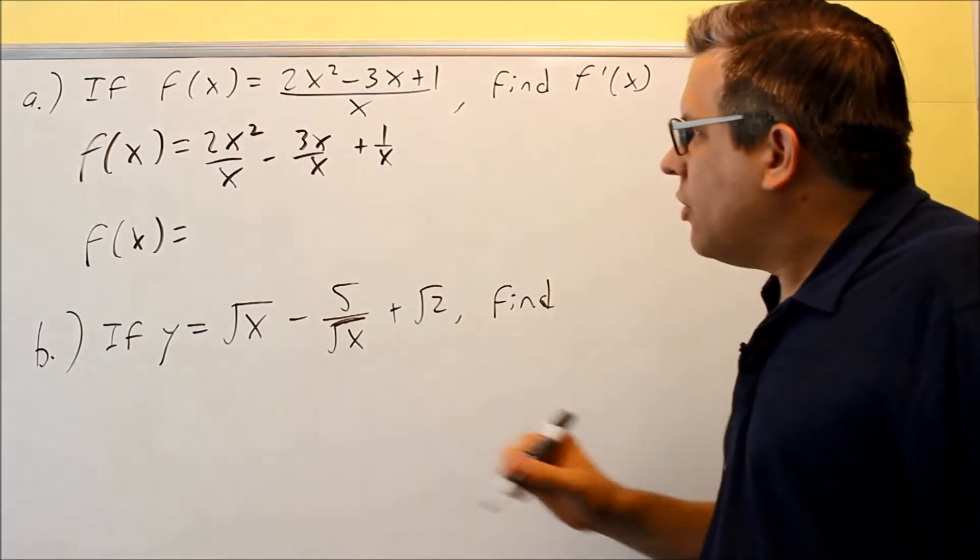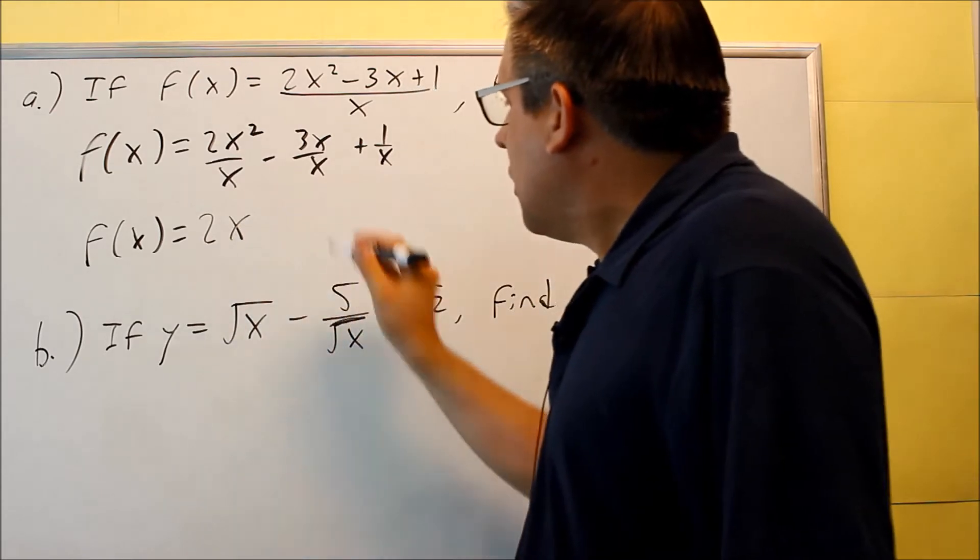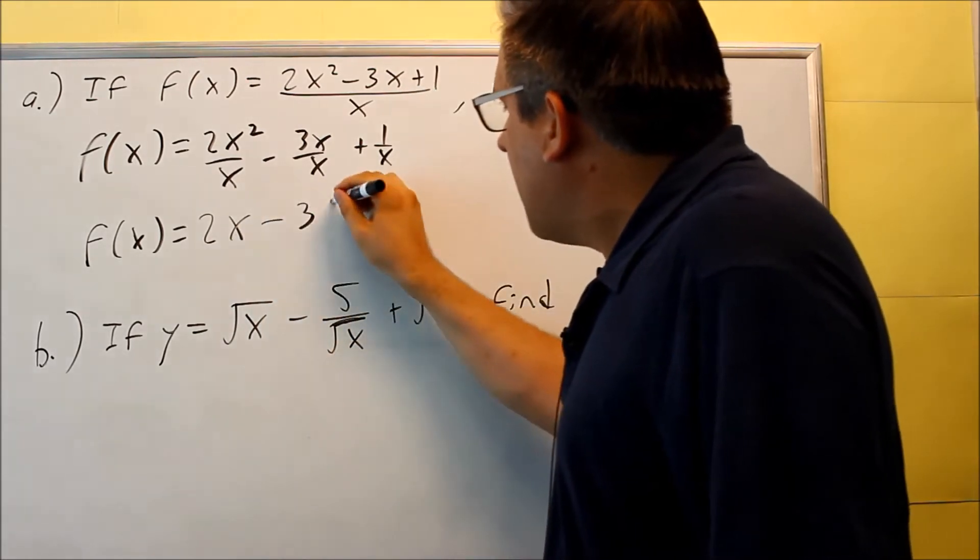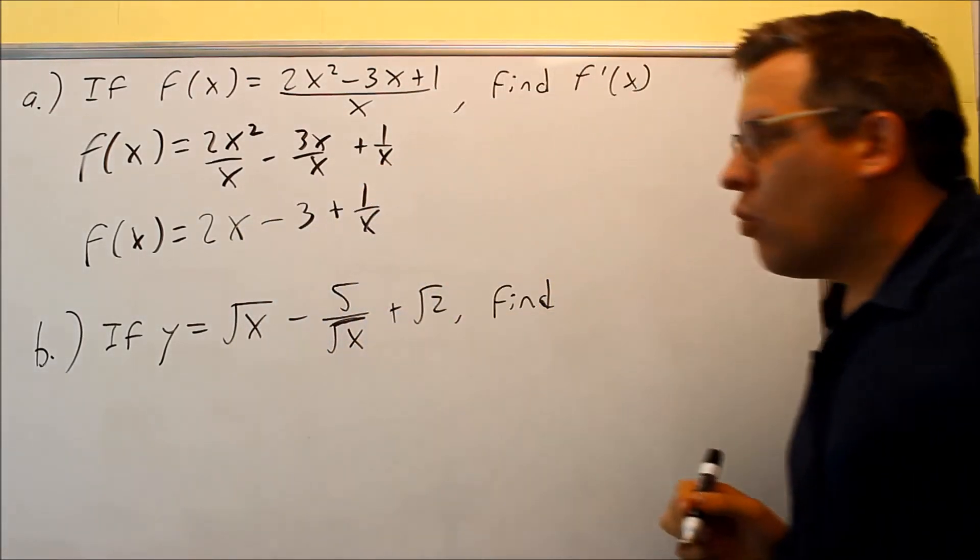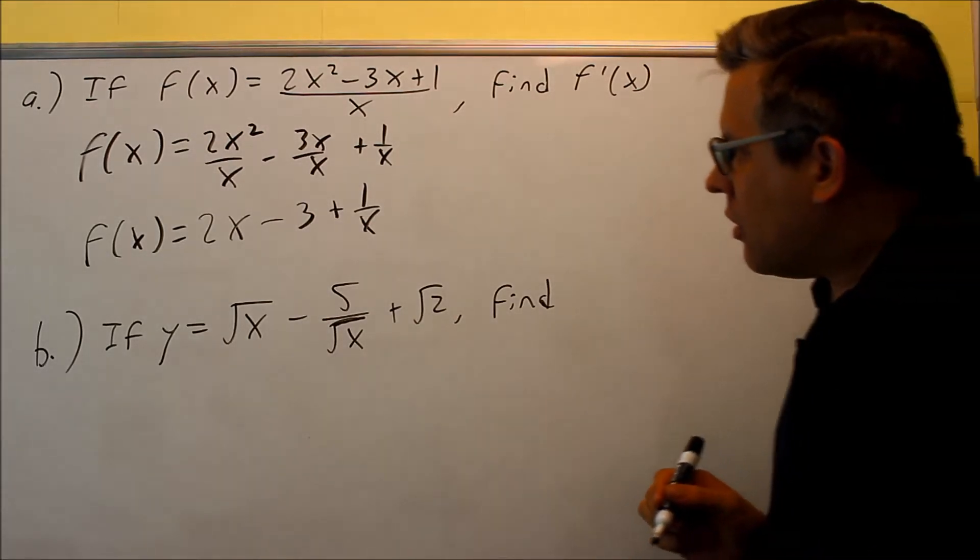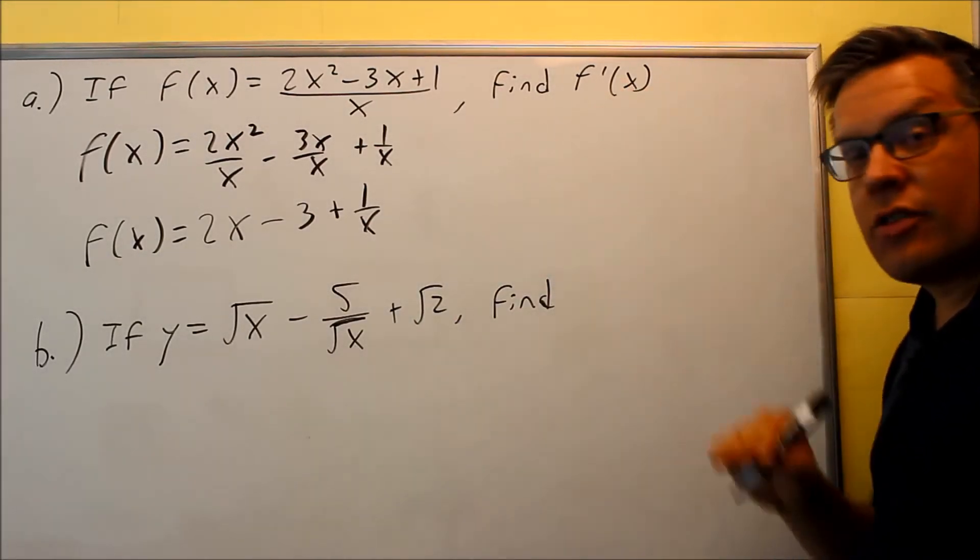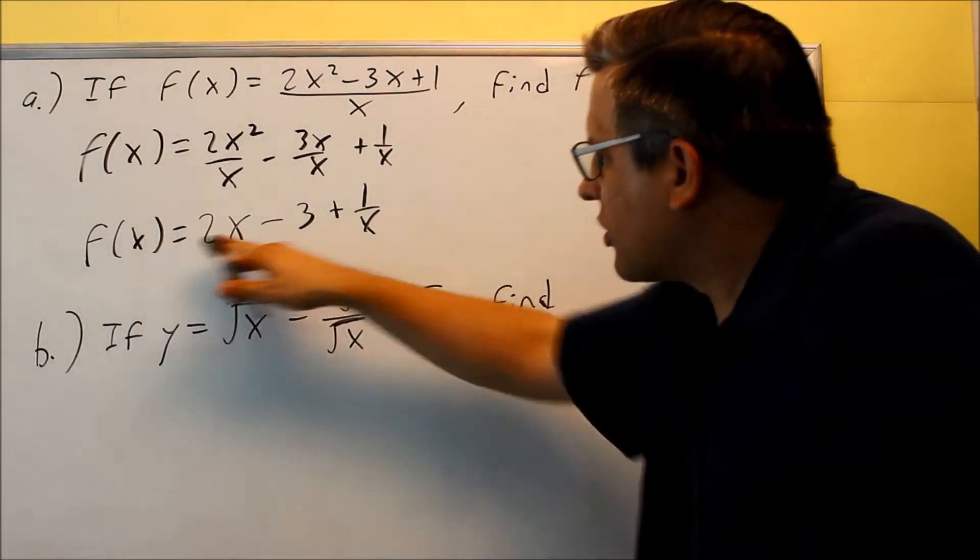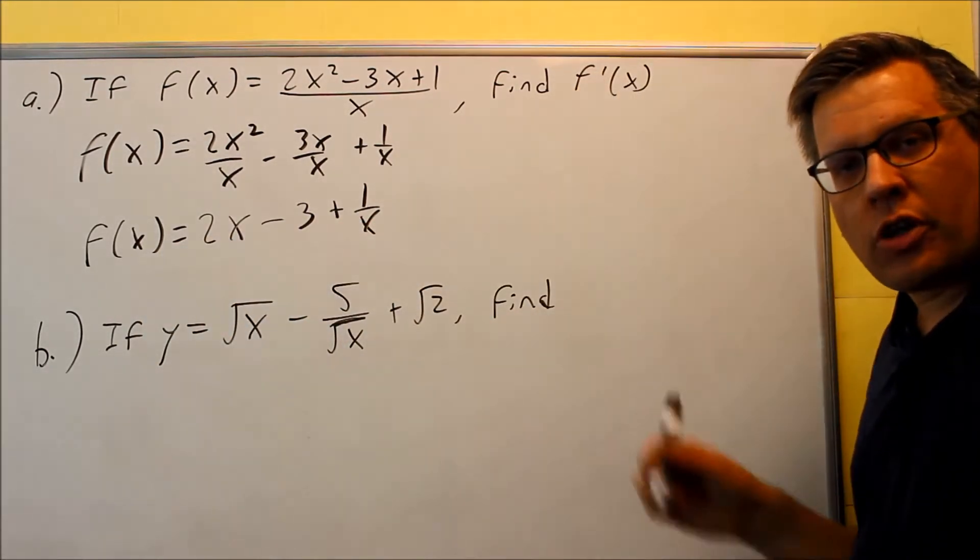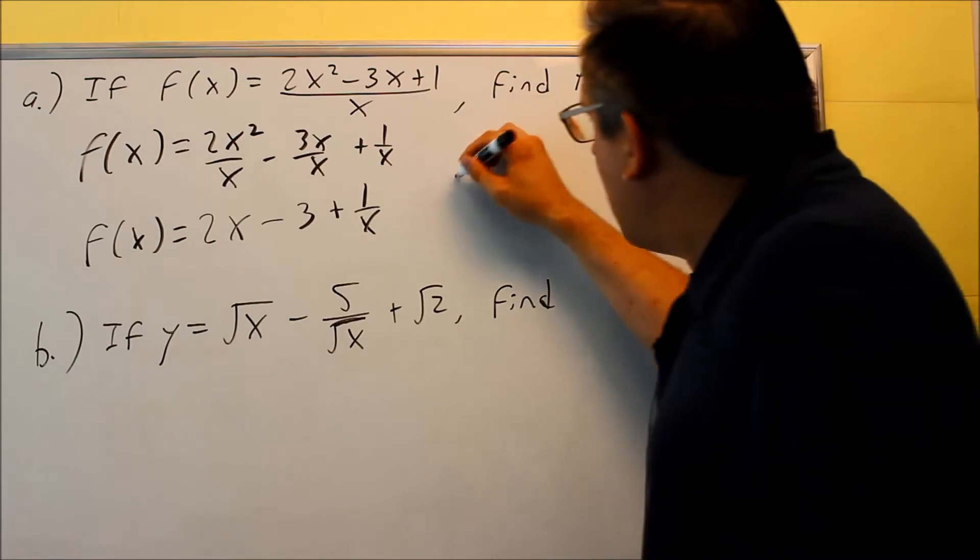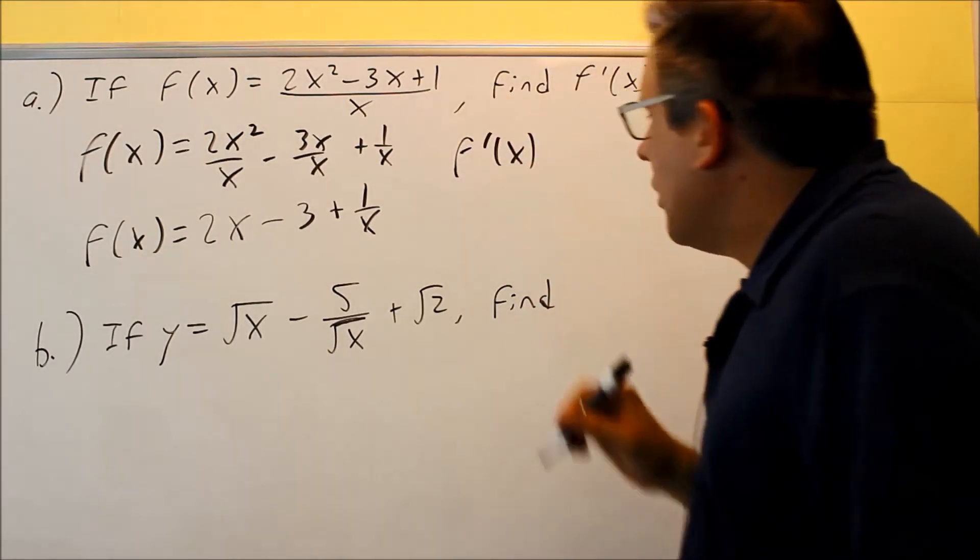So when you simplify all that, you're going to get 2x minus 3 plus 1 over x. So that's just the preliminary setup work. We haven't done anything yet. We haven't found the derivative. We're just doing this first just to get it set up to where we can apply the power rule. So now, here is where we're going to find the derivative.